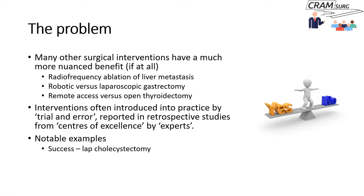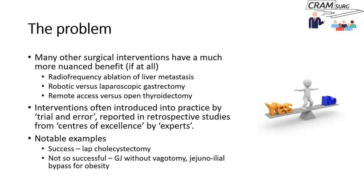Some, such as laparoscopic cholecystectomy, have been a success — though not proven superior to open cholecystectomy in a randomized control trial — and the laparoscopic approach is now standard. However, there are unsuccessful examples: gastrojejunostomy done without vagotomy led to severe and painful anastomotic ulcerations, and jejunoileal bypass for obesity unfortunately caused cirrhosis in many patients and death. That is why interventions need to be assessed.